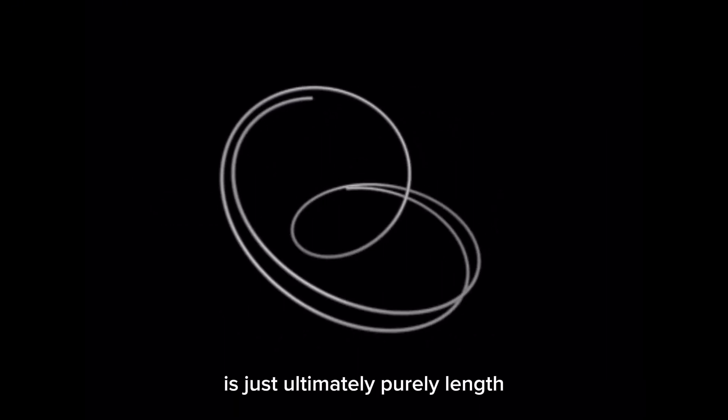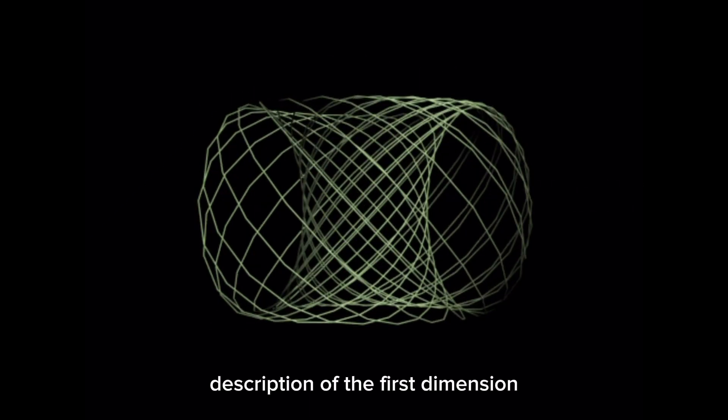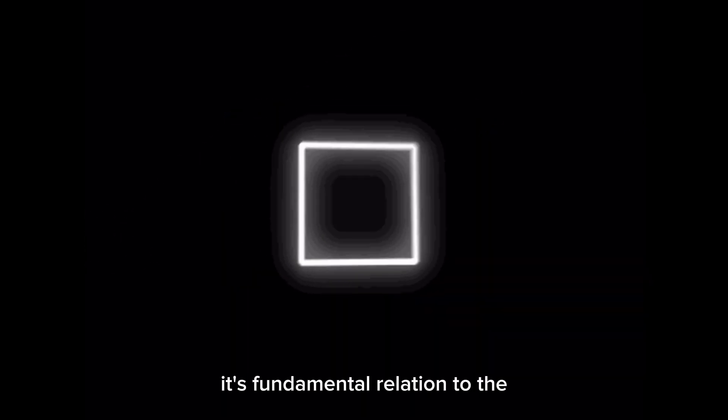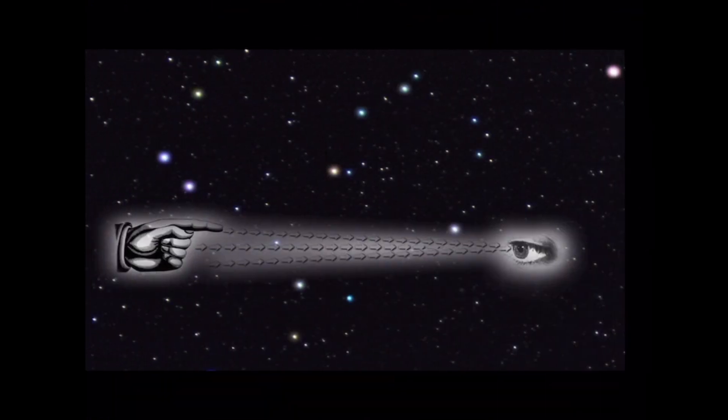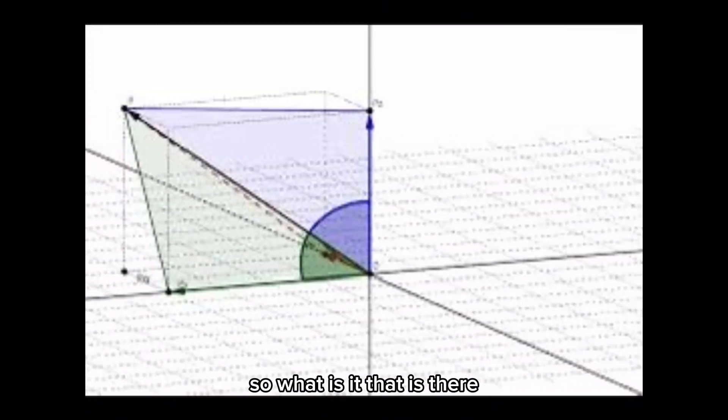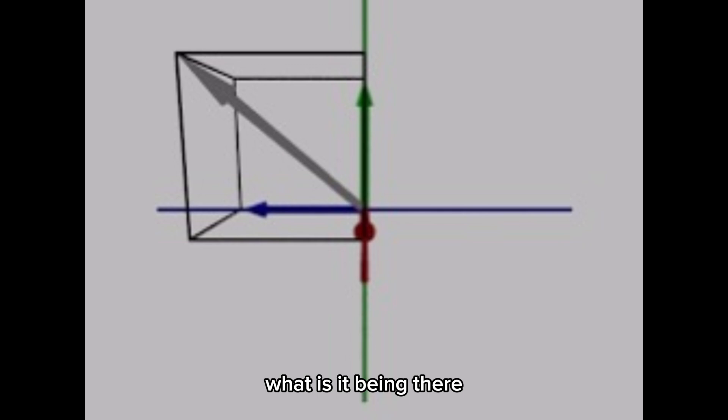Now the first dimension is just ultimately purely length, and I never really got to the description of the first dimension and ultimately its fundamental relation to the zero dimension. Because the zero dimension is actually the first dimension. Now the zero dimension has no length, has no depth, has no extension, but it is ultimately a point, so it is there.